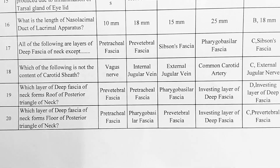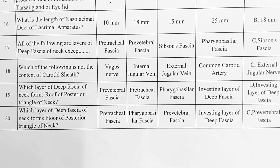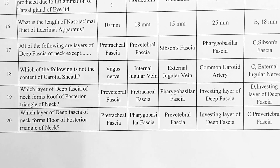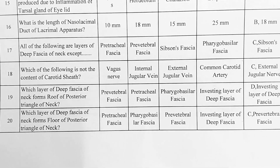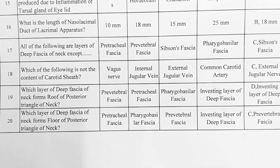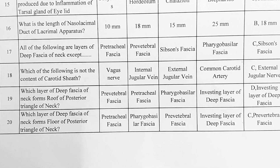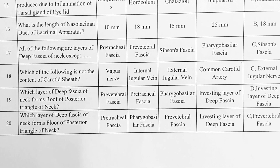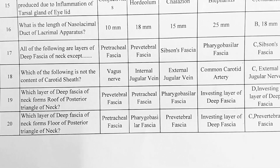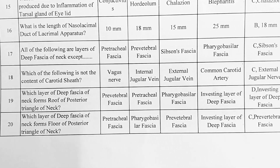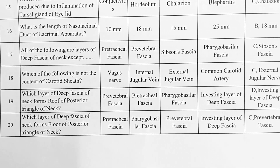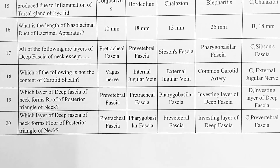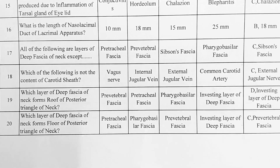Next. All of the following are layers of deep fascia of neck except: Options — A: pretracheal fascia, B: prevertebral fascia, C: Sibson's fascia, D: pharyngobasilar fascia. Option C is correct, Sibson's fascia.